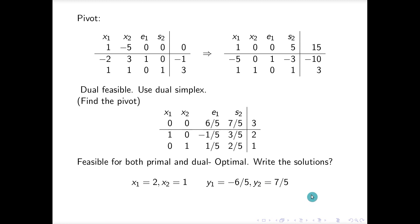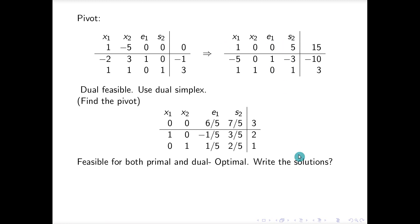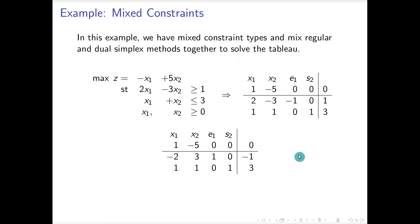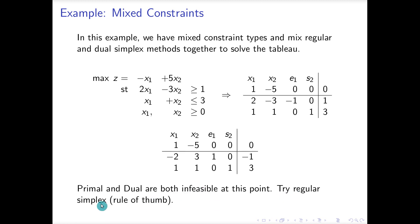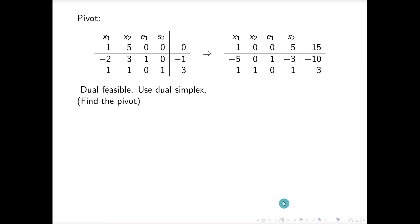That was an example with mixed constraints and a mixed row zero. The rule of thumb is: if you have mixed constraints, try using regular simplex first to see if you can get one of the two conditions feasible — either all positive in row zero or all positive in the right-hand side.